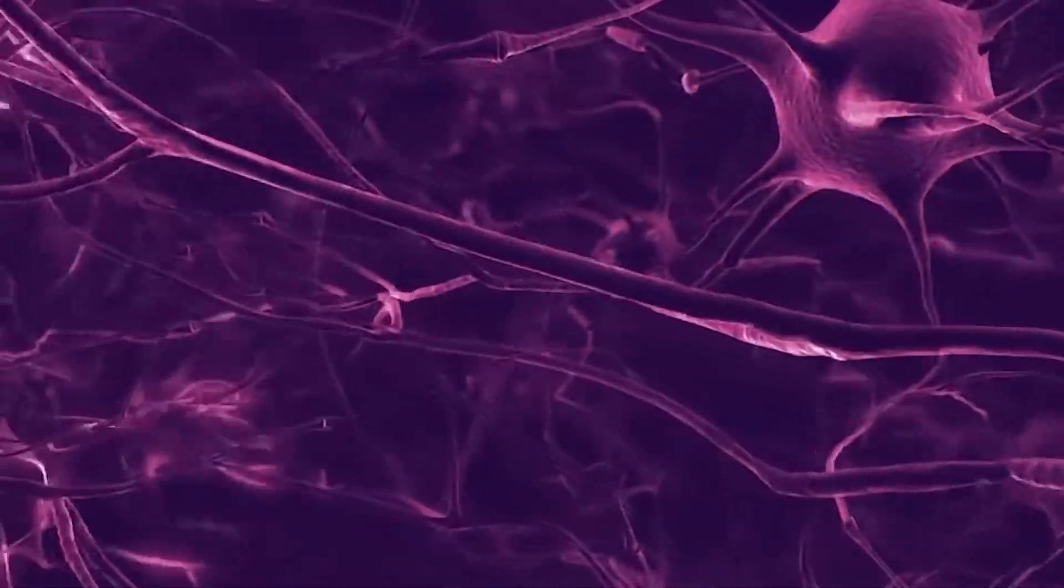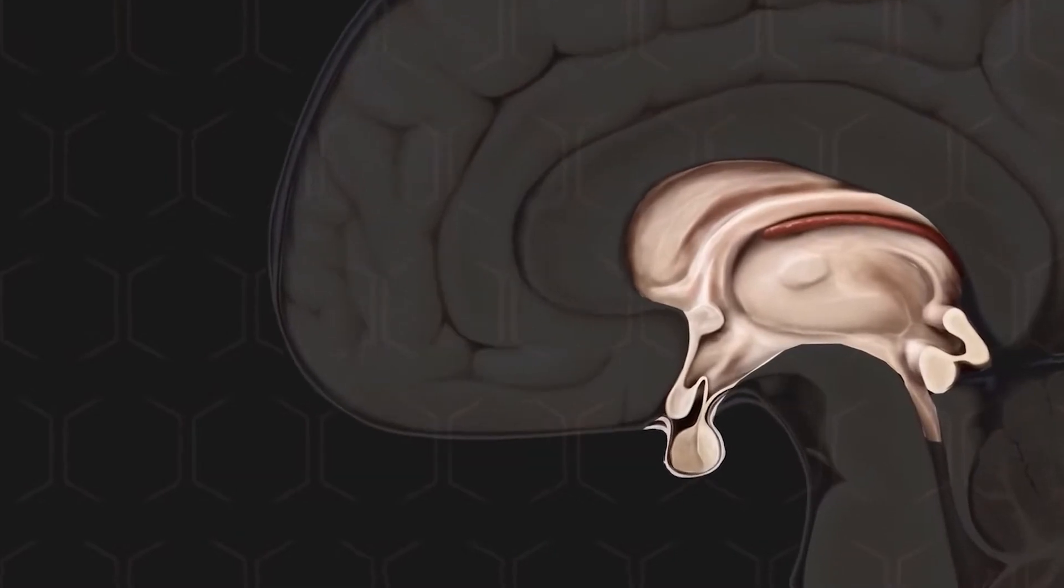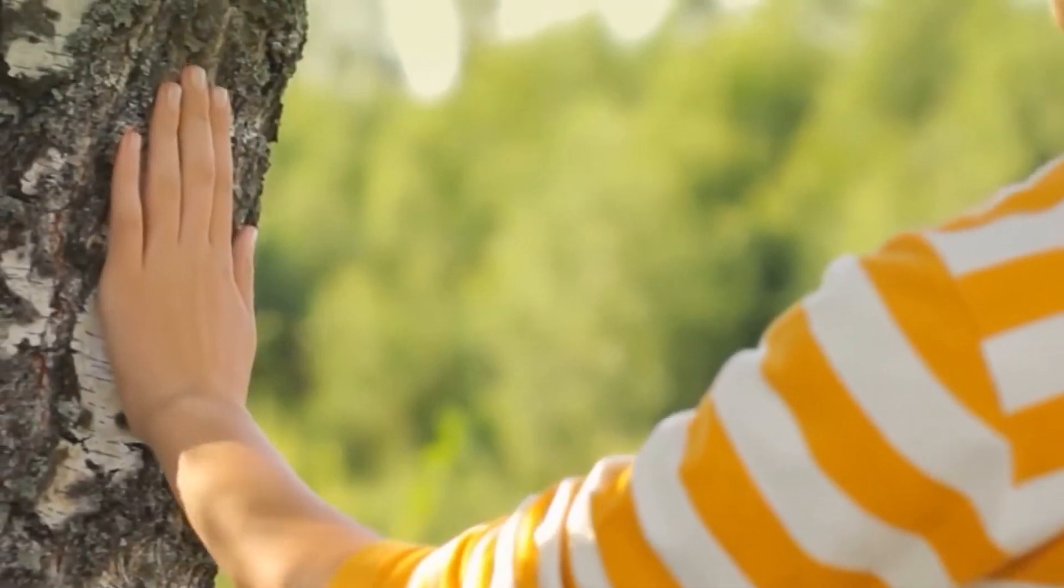This net-like bundle of neurons goes through the hindbrain, midbrain, and a small part of the forebrain called the hypothalamus. It is about the size of a little finger.